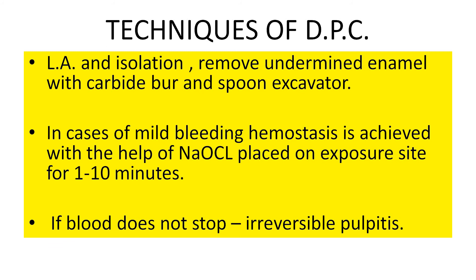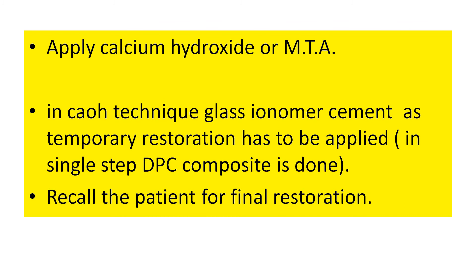Regarding the technique of direct pulp capping: first, give local anesthesia and do isolation. Then remove the undermined enamel with a carbide bur and spoon excavator. In case of mild bleeding, hemostasis is achieved with sodium hypochlorite placed on the exposure site for 1 to 10 minutes. If the bleeding does not stop, it indicates irreversible pulpitis and you must go for root canal treatment instead.